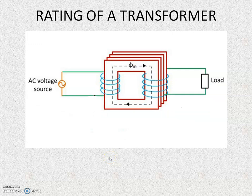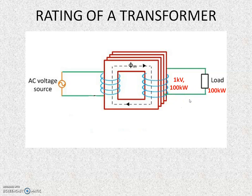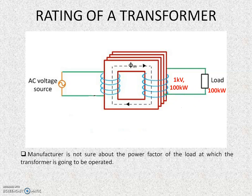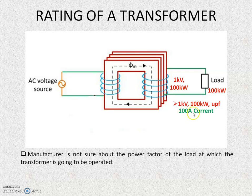Now let us discuss the rating of a transformer — how it is specified by the manufacturer. Consider a circuit with an AC source voltage applied to the primary and a load connected to the secondary. The load is always specified in kilowatts, which is the real power converted to useful work. Let the load be 100 kilowatts, and let the transformer be rated as 1 kV, 100 kW. At unity power factor, the load requires 100 amperes of current in the secondary circuit.